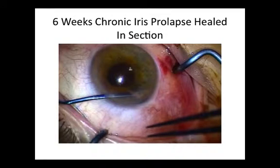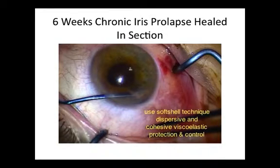When managing this condition, it is always important to fill the anterior chamber with viscoelastic. I would usually use a soft-shell technique — that is, a combination of both dispersive viscoelastic to protect the endothelial cells and cohesive viscoelastic to provide the best protection, good working space, and control of the iris tissue.